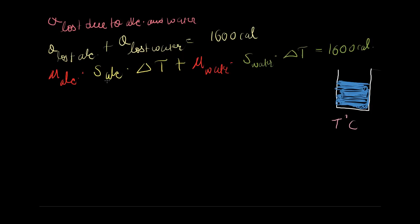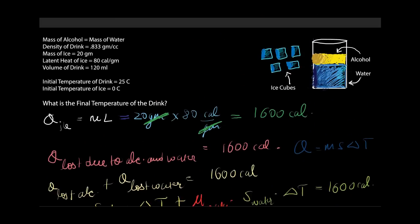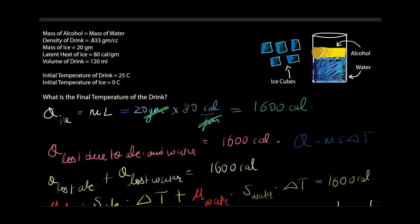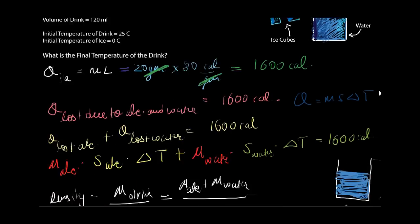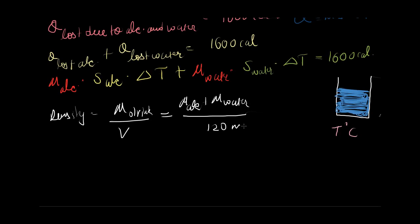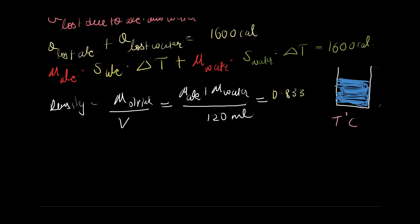They also give us one thing here that the density of the drink is 0.833 grams per cubic centimeter and that is without the ice. So what is density? Density is mass of the drink divided by volume of the drink. And that is the mass of the drink initially was the mass of alcohol plus the mass of water divided by volume, which was 120 milliliters. That should be equal to the density which they gave us, 0.833.